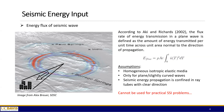This concept is named the energy flux of seismic waves. According to Professor Aki and Richards in 2002, the flux rate of energy transmission in a plane wave is defined as the amount of energy transmitted per unit time across per unit area, normal to the direction of propagation. There are important assumptions with this equation: the media is homogeneous and isotropic elastic; the wave is a plane wave or slightly curved; and the seismic energy propagation is confined in a ray tube with a clear propagation direction. Those three assumptions are pretty strict, leading to difficulties in applying this equation to actual practical soil-structure interaction problems.